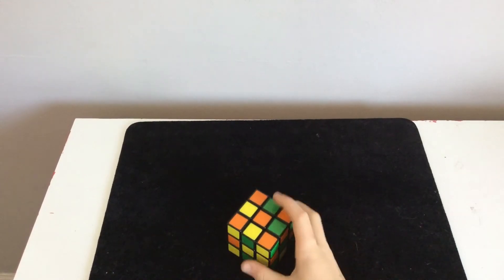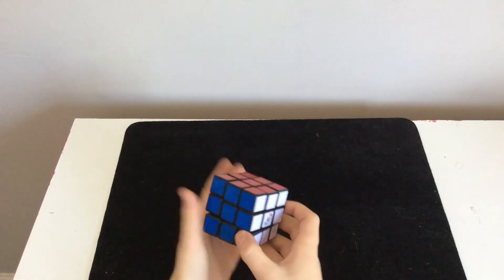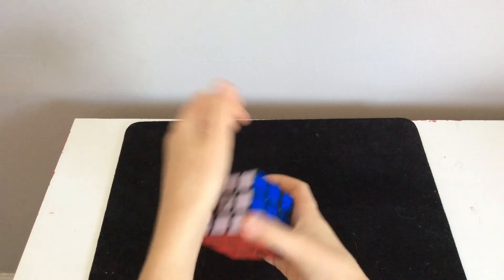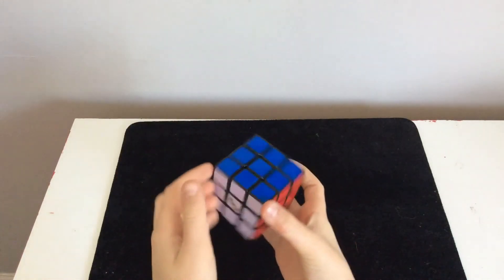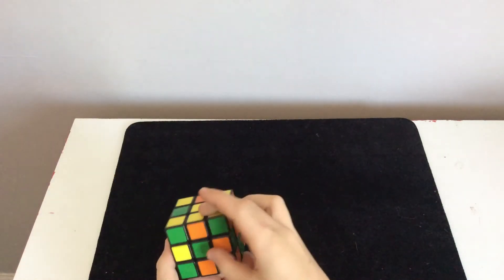And then once you get to this part, all you're going to do is you can either cover it with your hands and then flip it like that, and then you can just spin it like that and show that it's solved, not showing any of these sides.